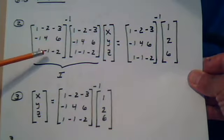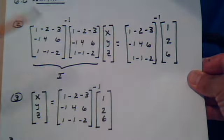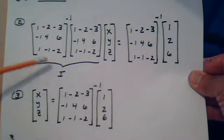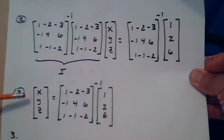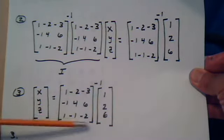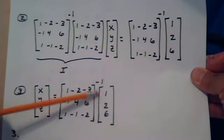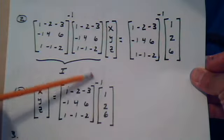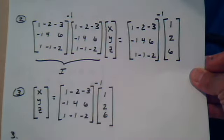The identity is like a one — one times a matrix gives you that matrix. We say 'identity' instead of 'one.' So the identity times this matrix is just this matrix. This is what we have so far. Most of our work will be finding this inverse, then plugging it in and continuing with the multiplication.